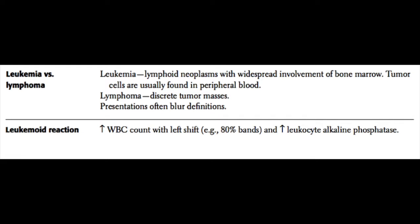The distinction between leukemia and lymphoma: leukemia is a lymphoid neoplasm that tends to originate in the bone marrow, and you'll usually find the tumor cells in the peripheral bloodstream. Lymphoma is also a lymphoid neoplasm but tends to arise as a discrete tumor mass in a lymph node. Leukemias are more of a liquid tumor found in the bloodstream, while lymphomas, though they eventually become liquid tumors, are early on a discrete tumor mass originating in a lymph node.